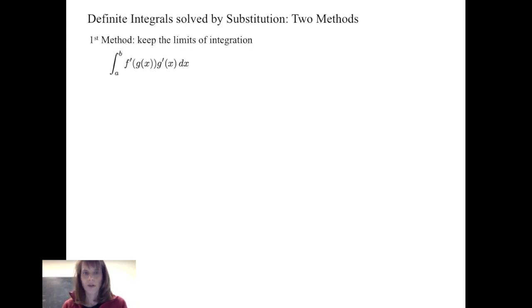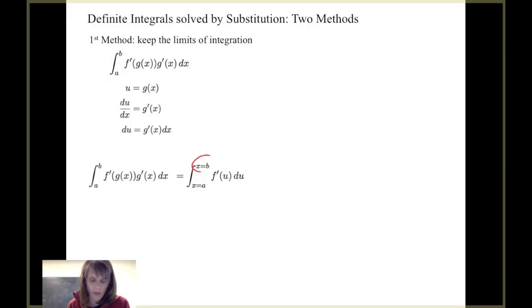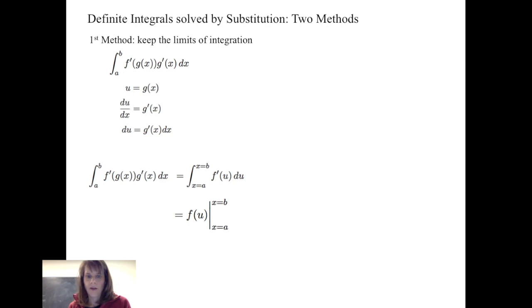Summarizing our method when using substitution with definite integrals: Method 1 — keep the limits of integration. When integrating f prime of g of x times g prime of x dx from a to b, let u equal g of x, so du equals g prime of x dx. Make the substitution, keeping it clear the original limits are x values, not u values. Find the anti-derivative, undo the substitution, then evaluate f of g of x at the limits — giving f of g of b minus f of g of a.